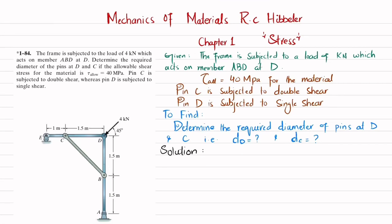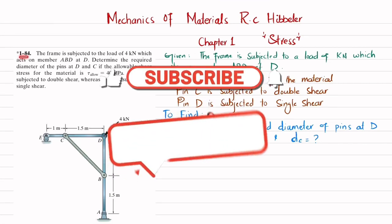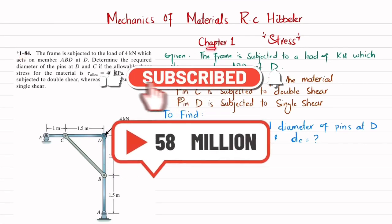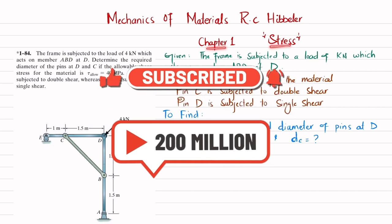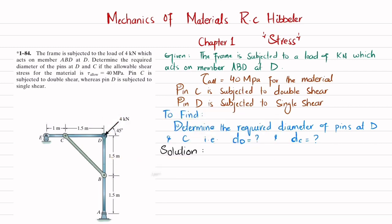Welcome back. Problem 1-84. This problem is taken from Chapter 1 — Stress — from the book Mechanics of Materials by R.C. Hibbeler. The statement is: the frame is subjected to a load of 4 kN which acts on member ABD at D.